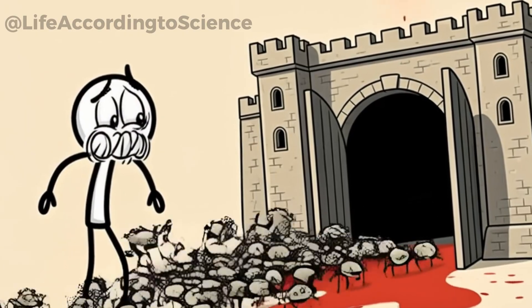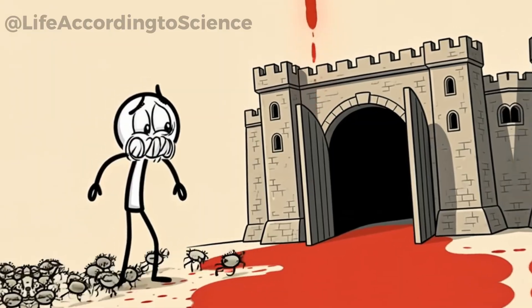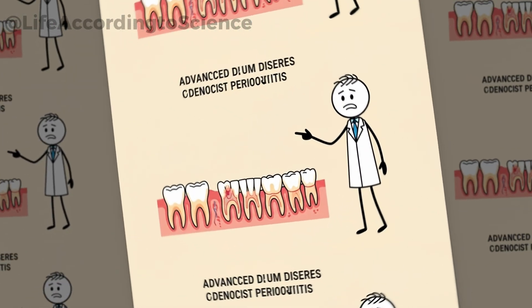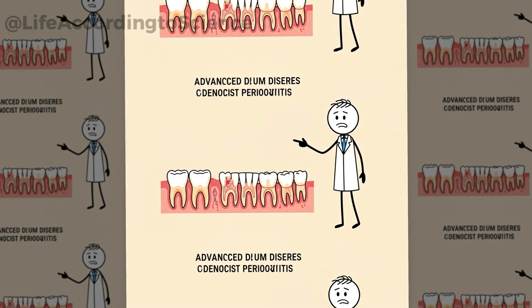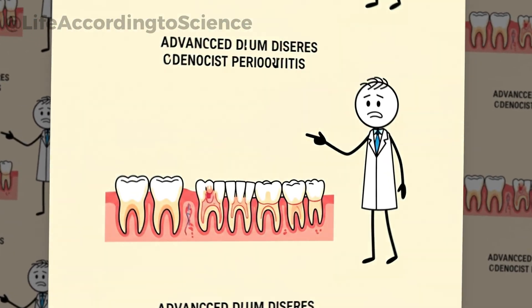What starts as mild gum bleeding can evolve into something much more destructive. Periodontitis is the advanced stage of gum disease, where bacteria attack not only the gums, but also the bone holding your teeth in place.